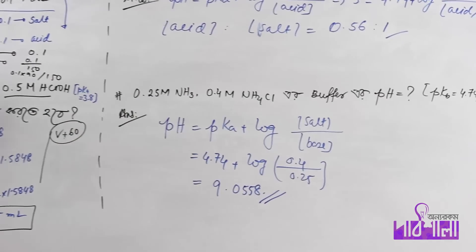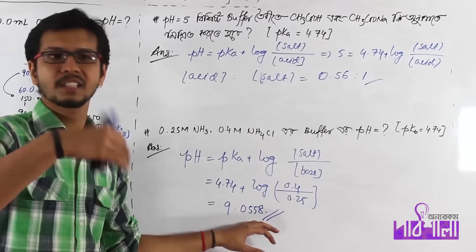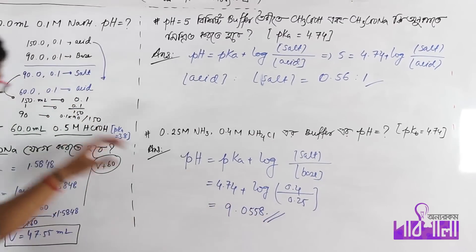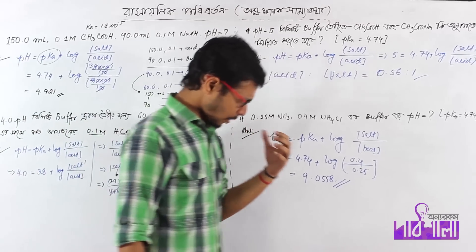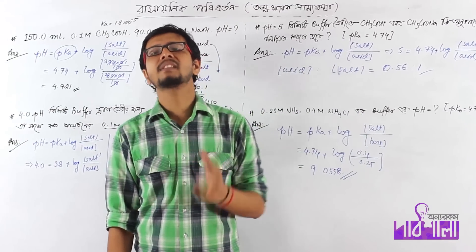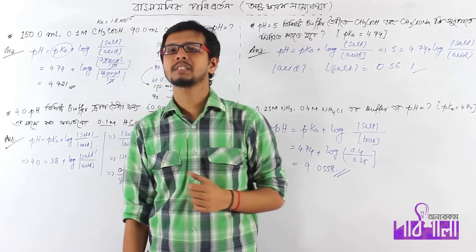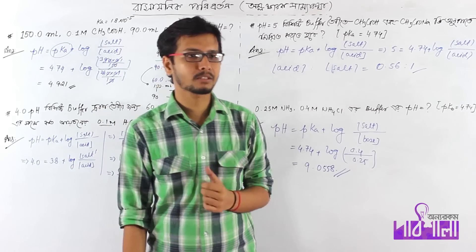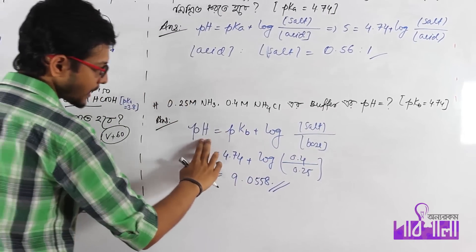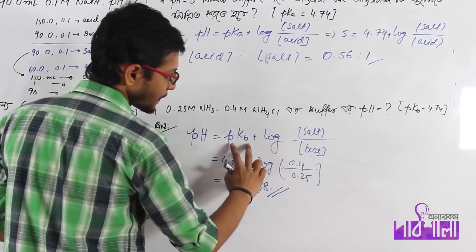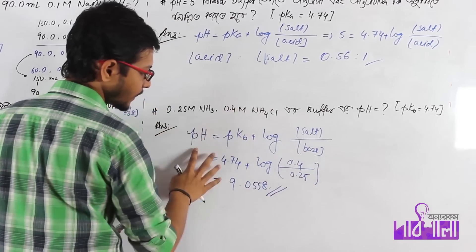So let's see. If we look at our basic buffer, the value is significant. The low buffer system — we look at the mathematical problem that we can solve. So the first thing is pkb. Our equation is: pH equals pkb plus log salt divided by base, pkb minus 1, and we can calculate the salt divided by base value.